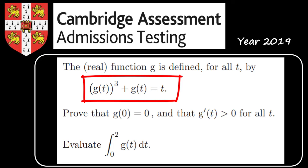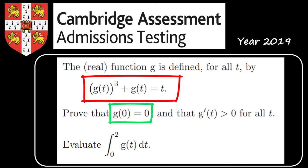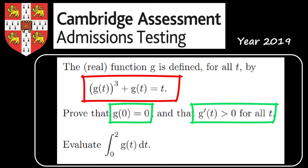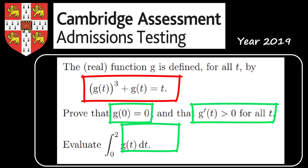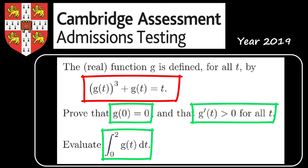We need to prove two things. One, that g of 0 equals 0. Two, that the derivative of g with respect to t is greater than 0 for all t. Finally, we will evaluate the integral from 0 to 2 of g of t with respect to t.